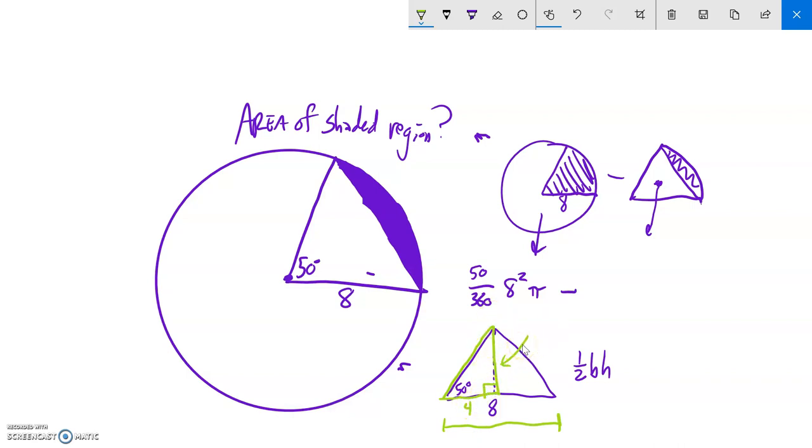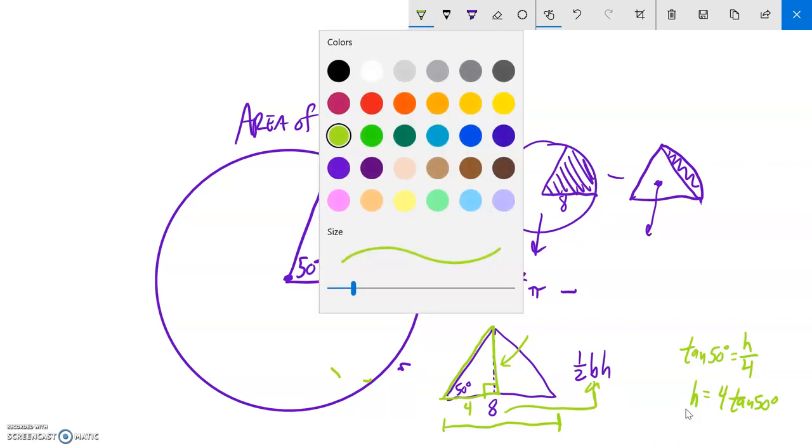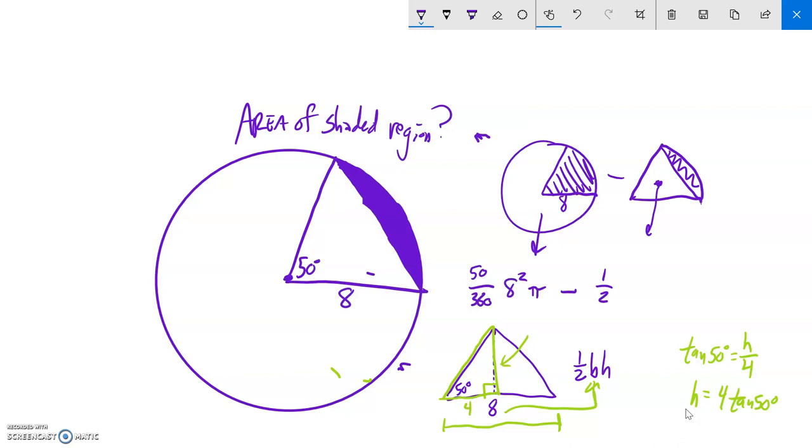So I know that this is 4. And I know that this is opposite. So that means the tangent of 50 degrees is opposite over adjacent. I'll just call this H for height, opposite over adjacent. And to solve this, I could multiply both sides by 4. So my height is 4 times the tangent of 50 degrees. That's what my height is. And my base is 8. So that means the area of the triangle then would be one half times the base times the height. And the height is 4 times tangent of 50 degrees.